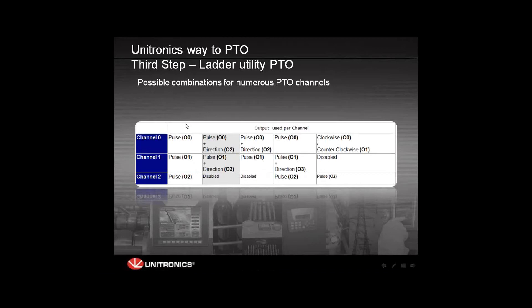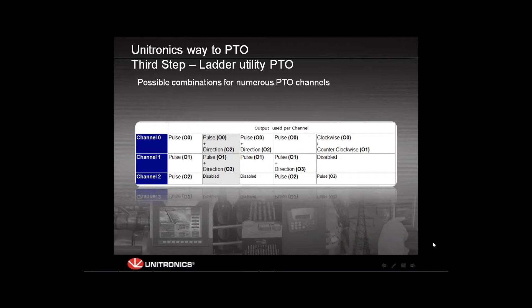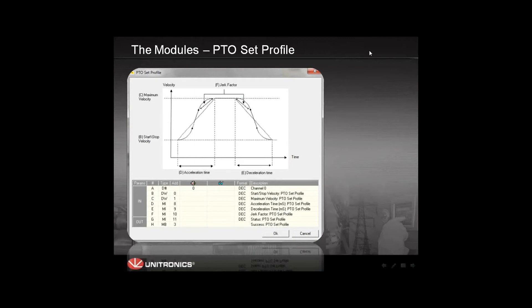You can see in the table the output numbers — these are the actual physical outputs. There is not much flexibility when choosing the output. For the first combination you have to use outputs zero, one, and two. For the second combination you use outputs zero and two for the first channel, and physical outputs one and three for the second channel. When using the PTO, you must follow these instructions, which are all listed in the help file.